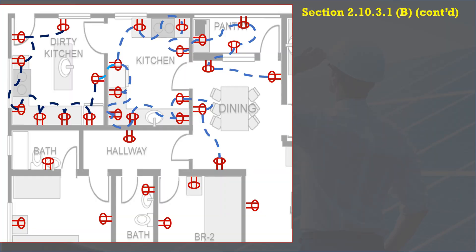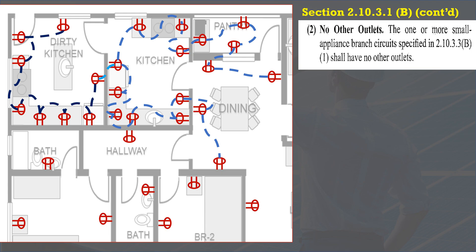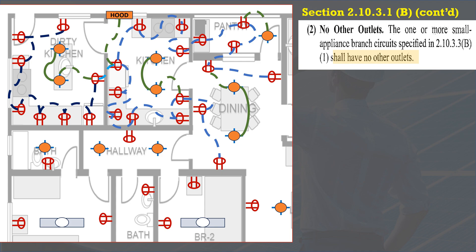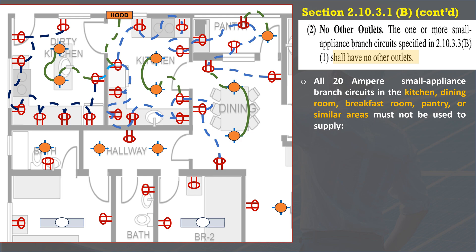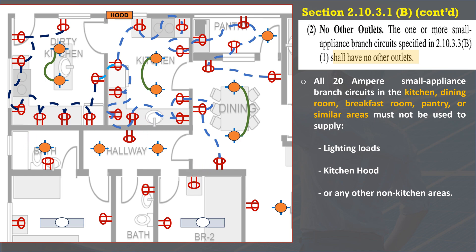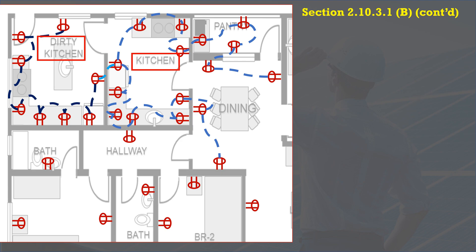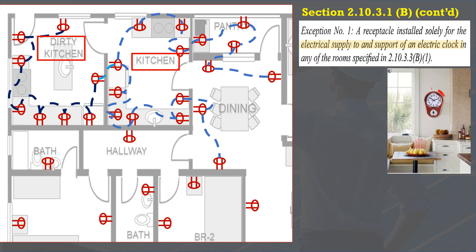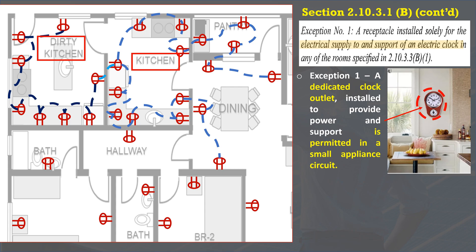In paragraph 2 of Section 2.10.3.1B, No Other Outlets: the one or more small appliance branch circuits specified in 2.10.3.3B.1 shall have no other outlets. Hence, all 20A small appliance branch circuits in the kitchen, dining room, breakfast room, pantry, or similar areas must not be used to supply lighting loads, kitchen hoods, or any other non-kitchen areas. A receptacle outlet for a dedicated clock installed in the kitchen, dining room, breakfast room, pantry, or similar areas is permitted in a small appliance circuit as specified in Exception 1.